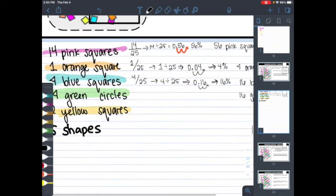And then lastly, 2 yellow squares. 2 out of 25 shapes can go to 2 divided by 25. When I do the math for that, I get an answer of 0.08.